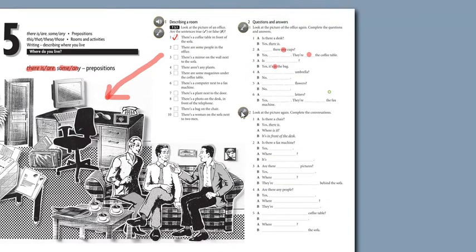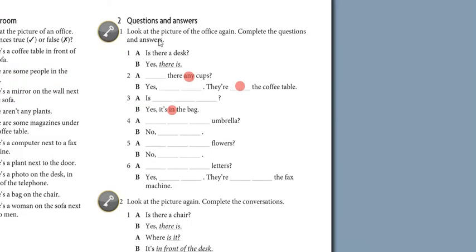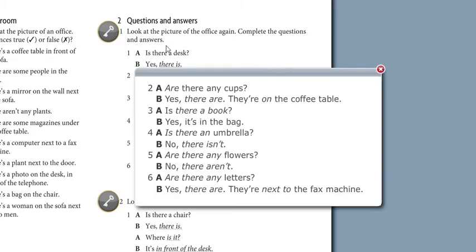Next question, question number 2. Look at the picture of the office again, complete the questions and answers. This is the answer key.